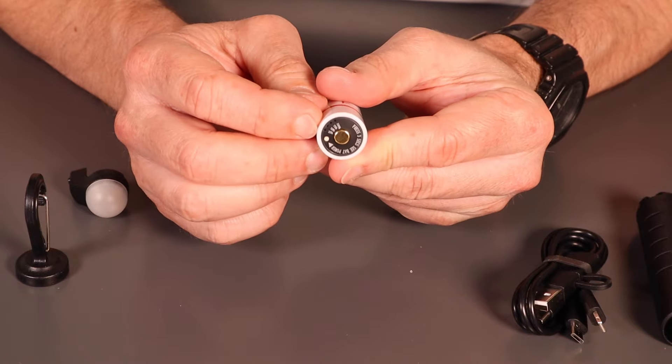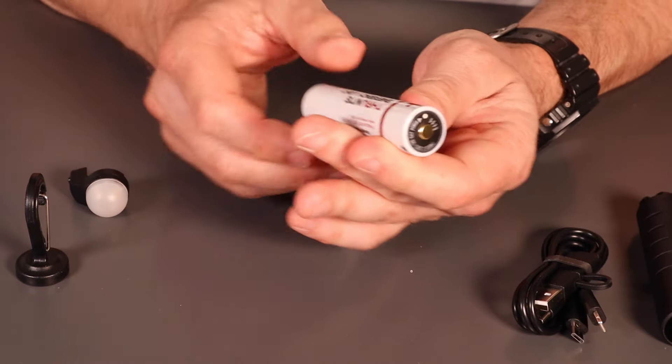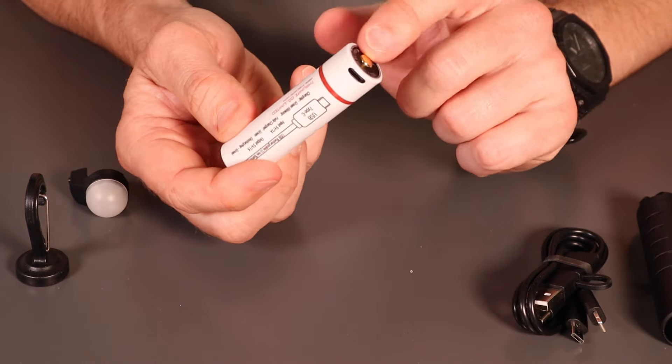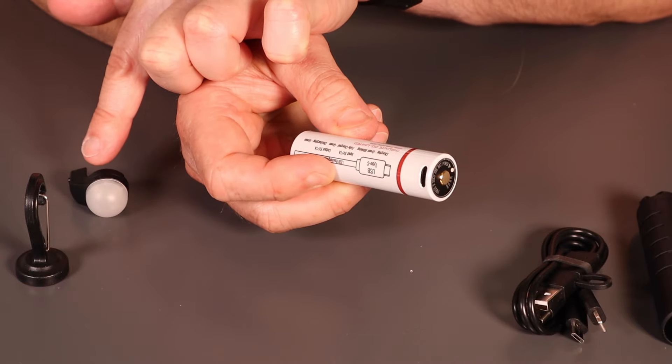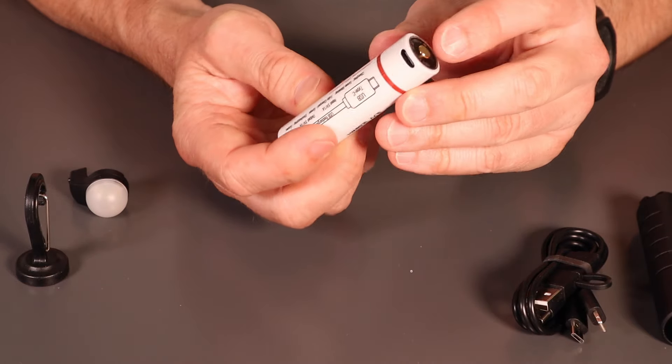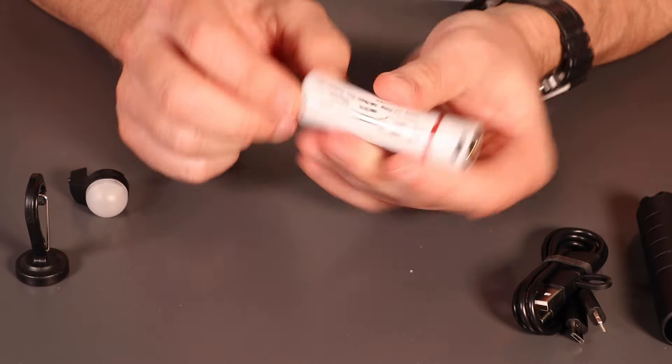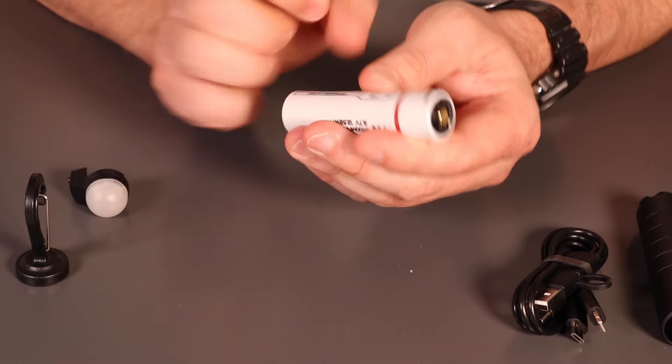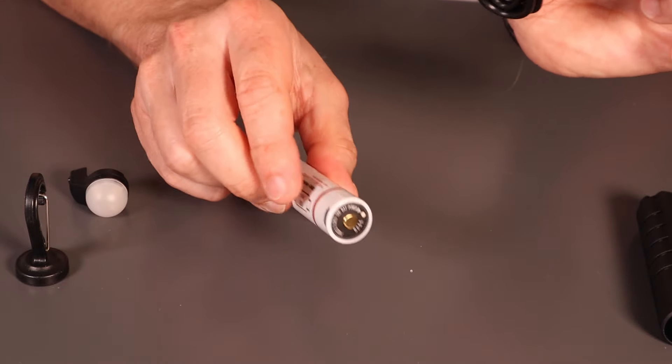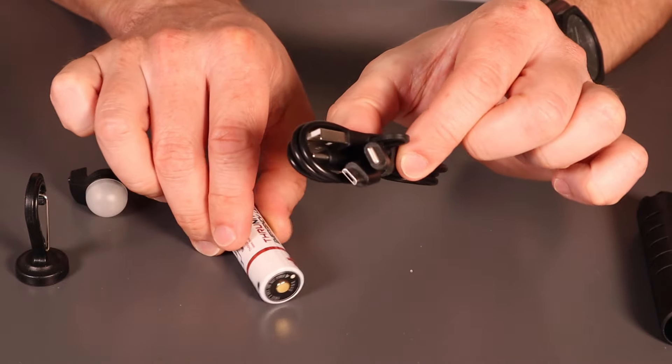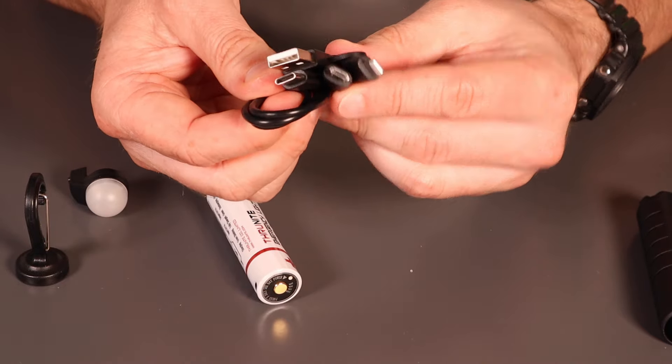That can be used either to power your flashlight or lantern head in any other 18650 compatible product, or as a power bank using the attached charging cable.